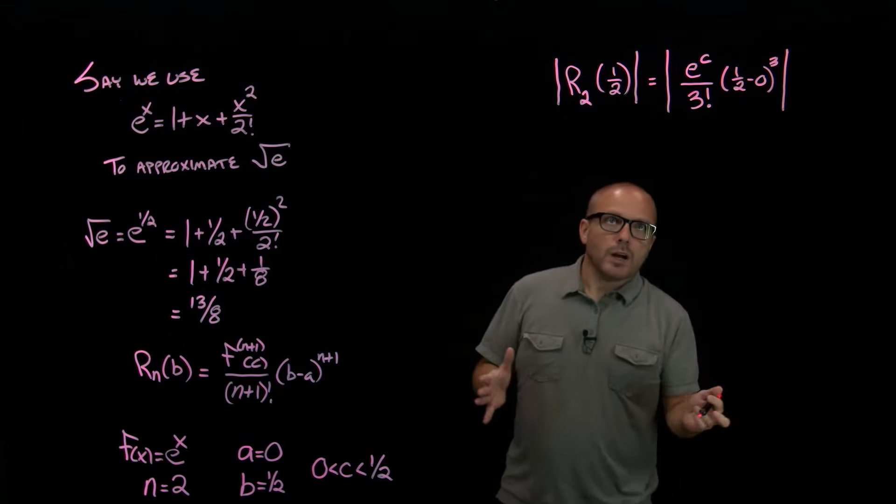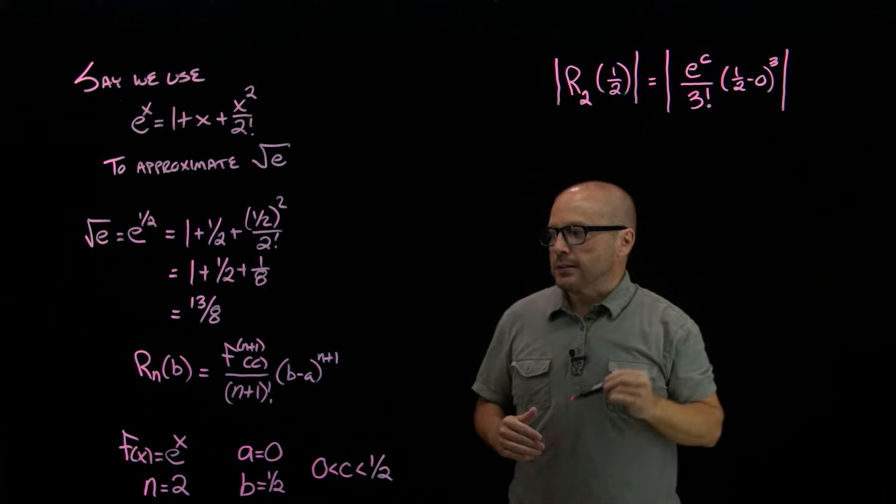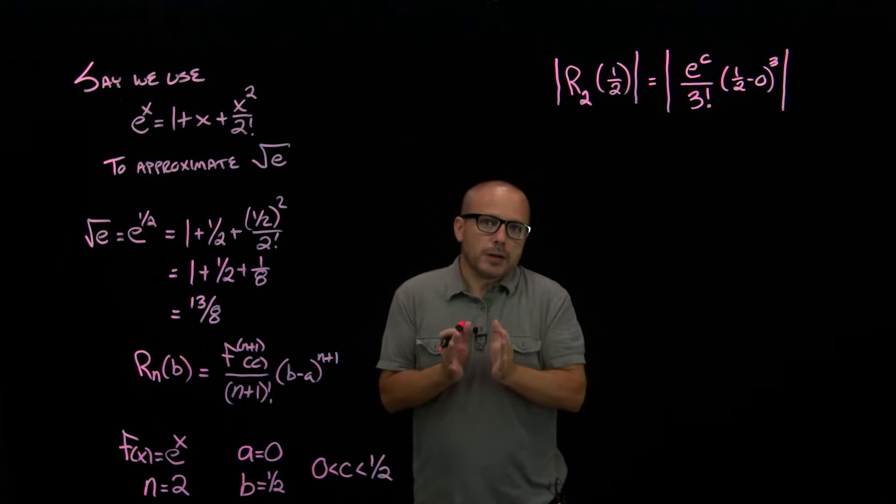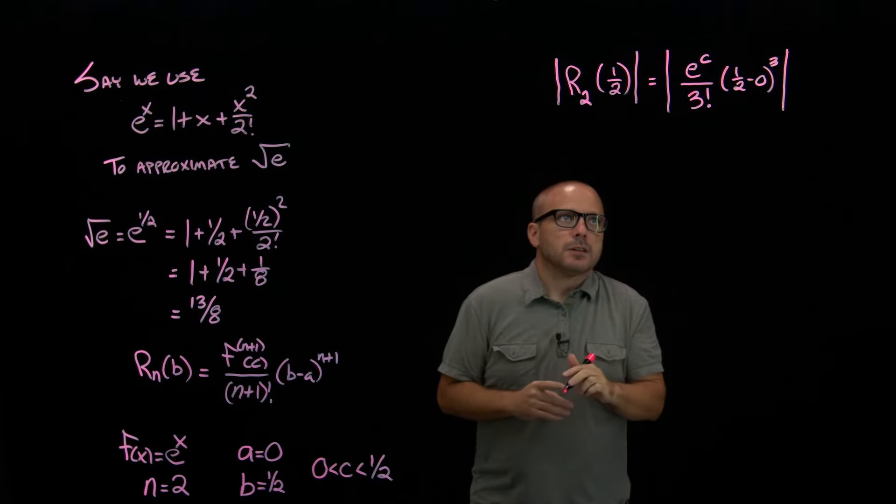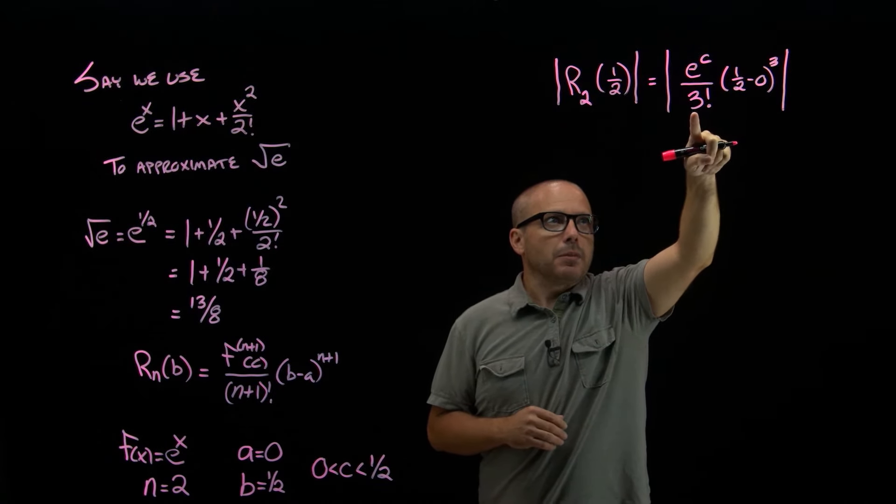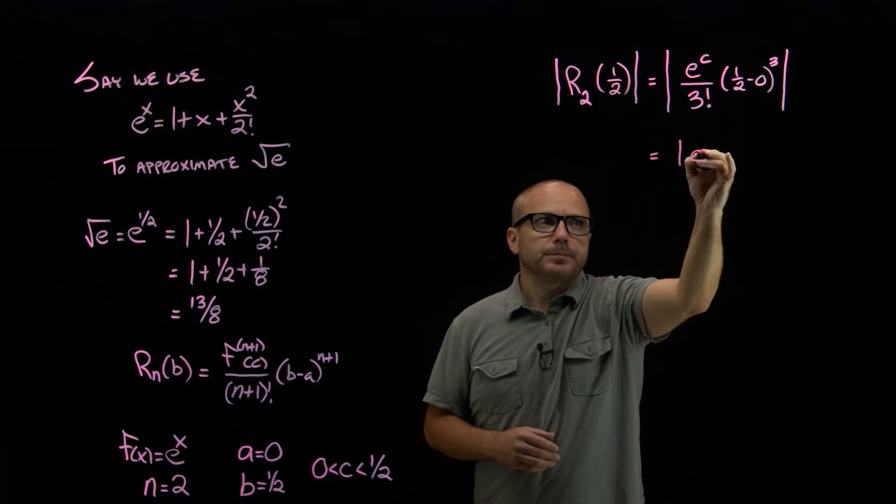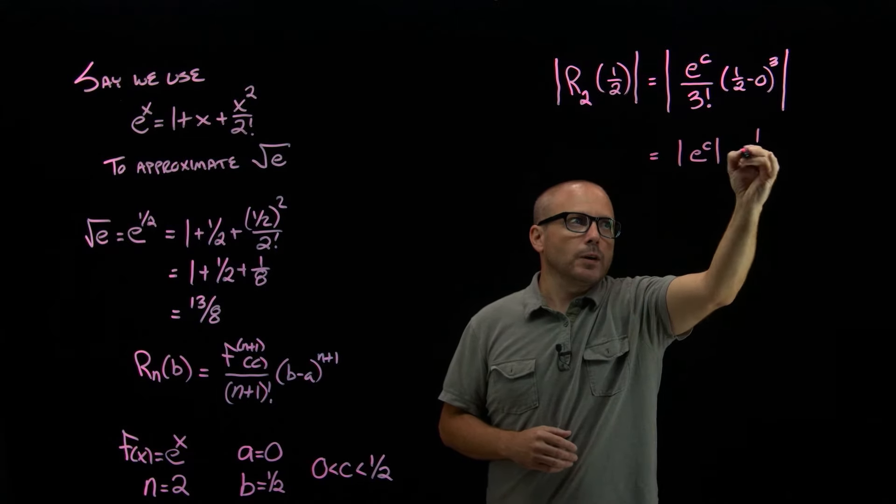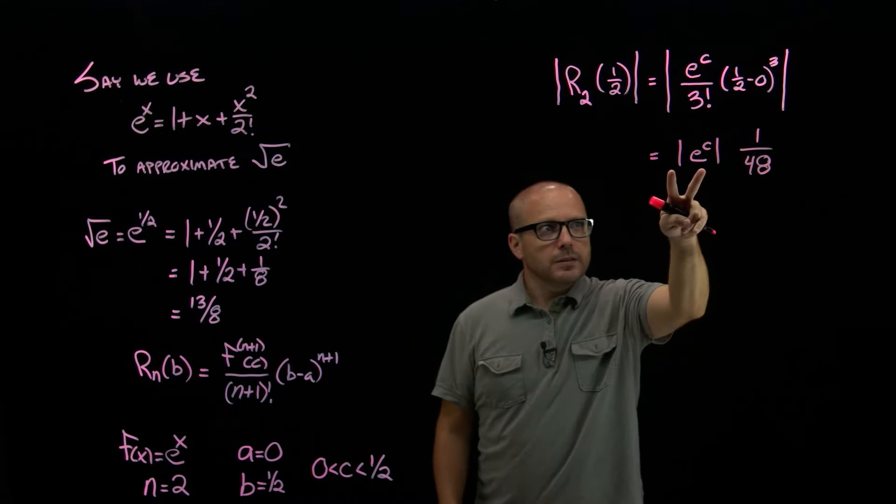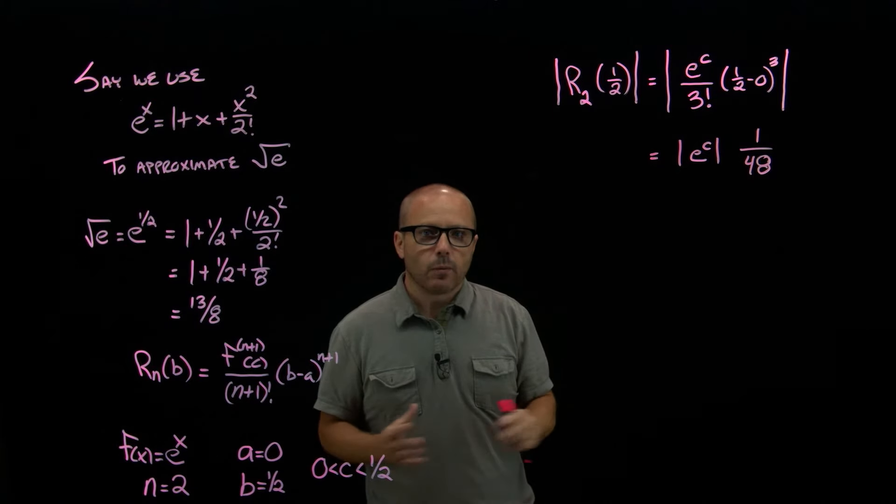All right, so no matter what the function was, we would know that number. We would know these numbers. We would know all of this. The only thing that's unknown is this function's n plus 1 derivative at c. So all we're hoping to do is put an upper bound on that magnitude. So let's separate the stuff we know from the stuff we don't know. That's a half cubed or an eighth. 3 factorial is 6, so 8 times 6 is 48. So we've got absolute value of e to the c times 1 over 48. So now my goal is to say, well, what's the biggest e to the c can be, given that c can only be somewhere between 0 and 1 half?